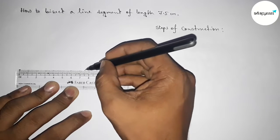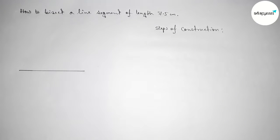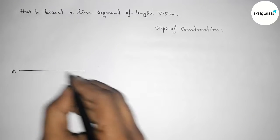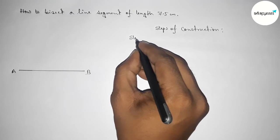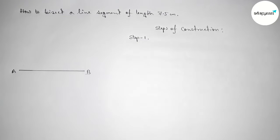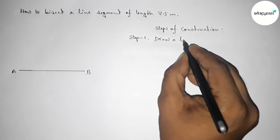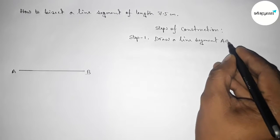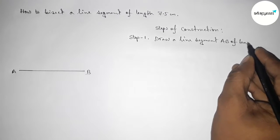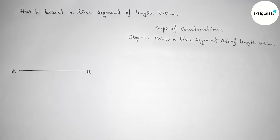...point five centimeter line segment. Okay, so taking here point A and here B. So step number one: first we have to draw a line segment AB of length 7.5 centimeters by using scale.